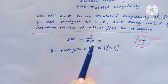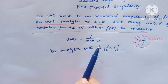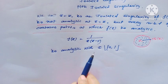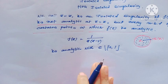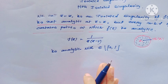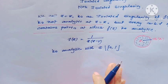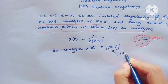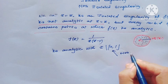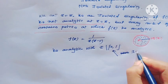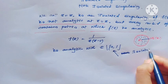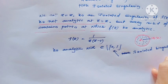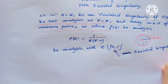For example, f(z) equal to 1 over z(z−1). This function is analytic over the whole complex numbers omitting the singleton set {0, 1}. That means the points 0 and 1 are called isolated singularities.